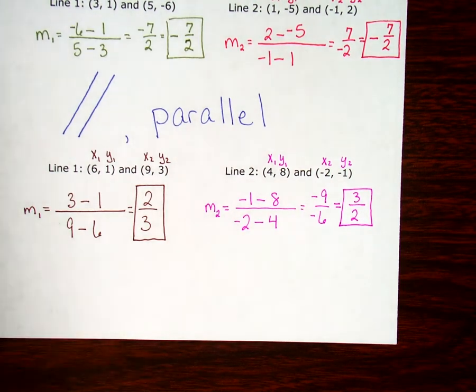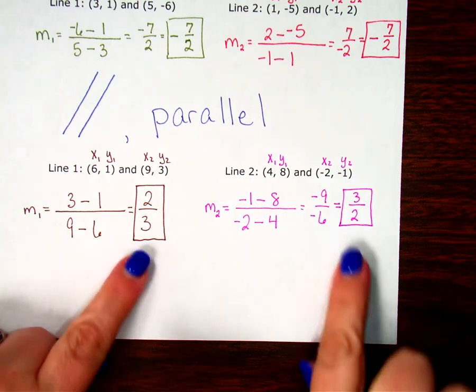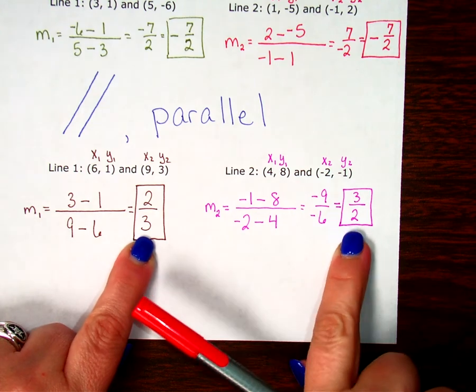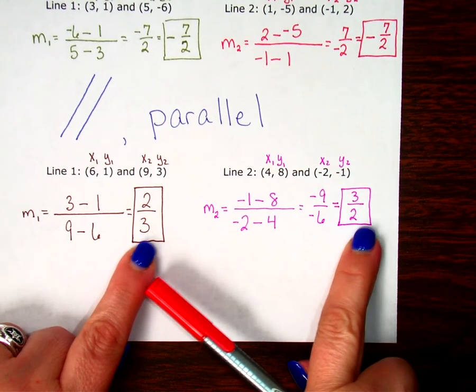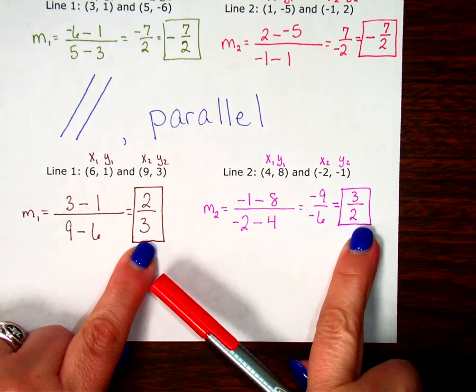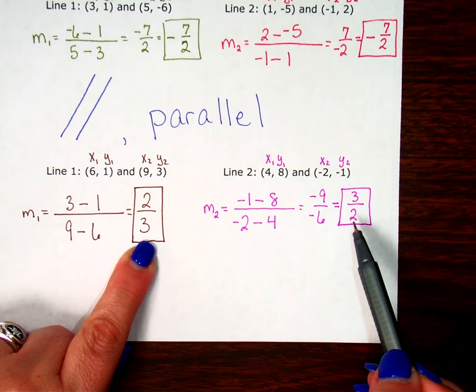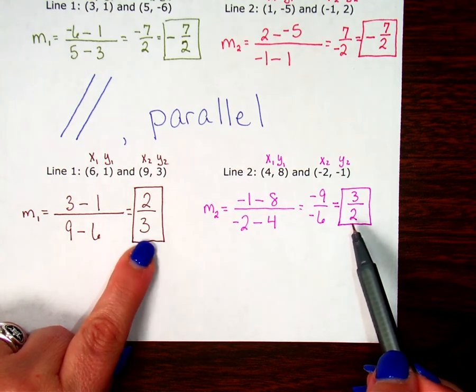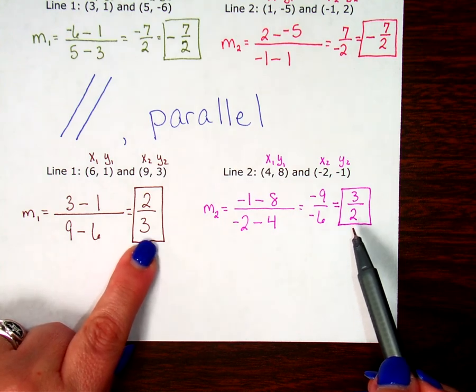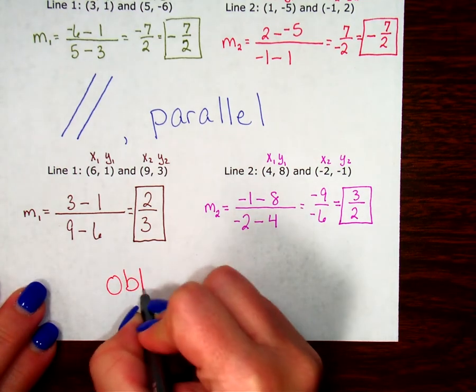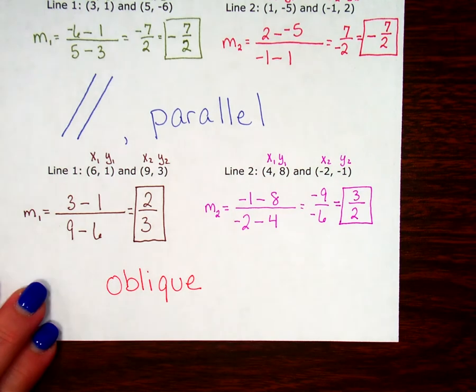If these two lines are parallel, then they are the same. 2 over 3, 3 over 2, those are not the same, right? Not the same number. This one is 0.6 repeating, and this one is 1.5 if you change them to decimals. Not the same numbers. So, they're not parallel. If they're perpendicular, they'll have opposite signs, and they'll be flipped over. These are flipped over, 2 over 3, 3 over 2. But, they're not opposite, right? They're both positive. So, since they're not opposite, they're only flipped over, I can't say they're perpendicular. These are oblique.